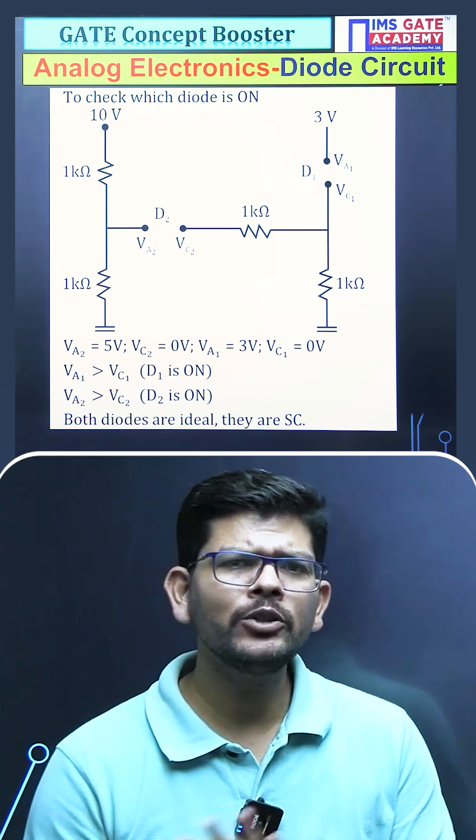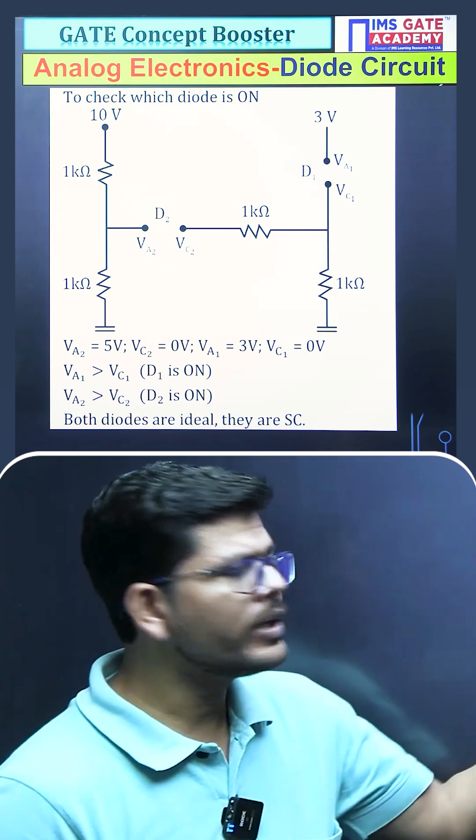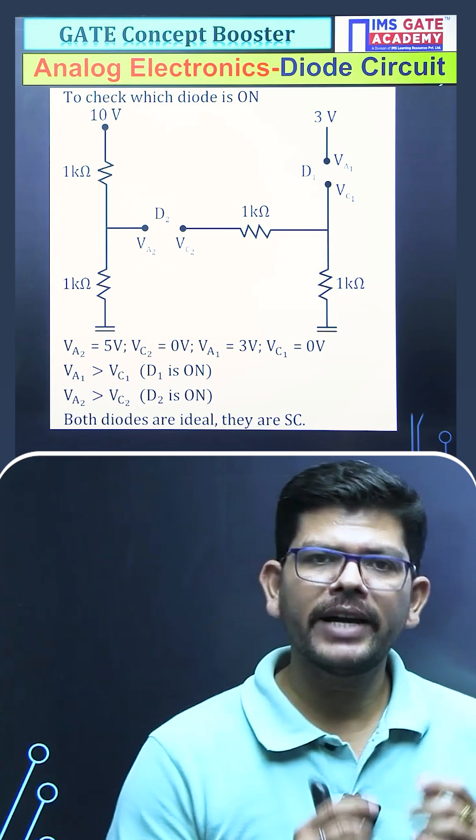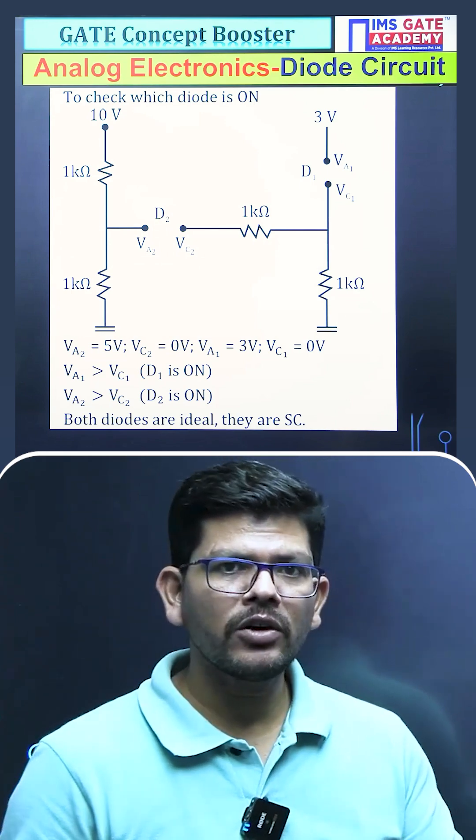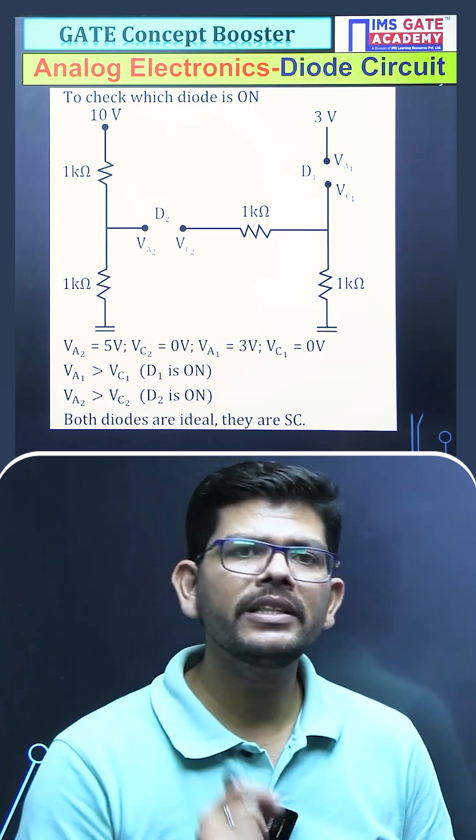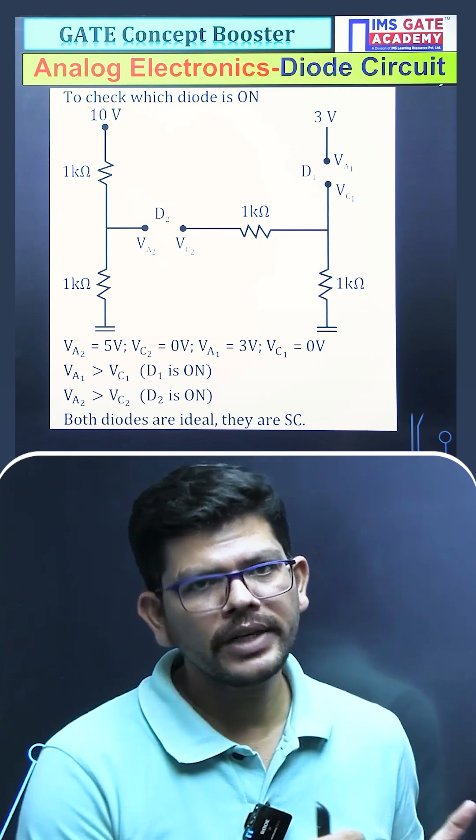First of all, assume that both the diodes are off here. If you're assuming that, then you can find the voltage VA2 here by applying the voltage divider and it will be 5V. You can find the voltage VA1 across diode D2 and that will be 3V. The voltage VC1 and VC2 both will be 0V in this situation.